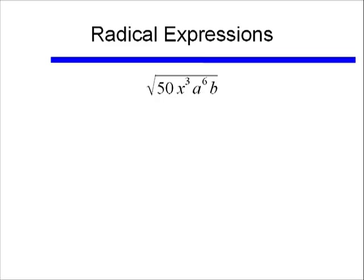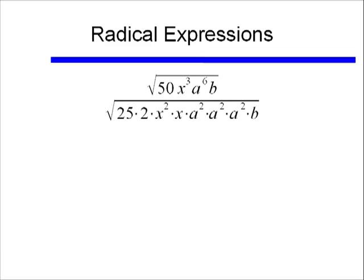Well 50, I think 50 breaks up in terms of 2 times 25, and I'm pretty sure square root of 25 is a perfect square. Well x cubed can break up into x squared times x, and x squared is a perfect square.